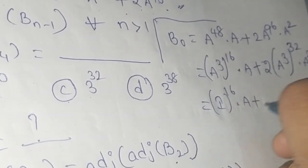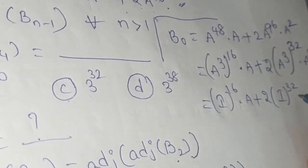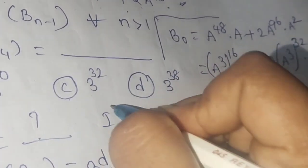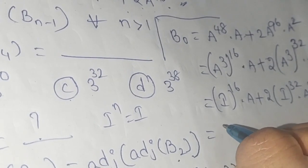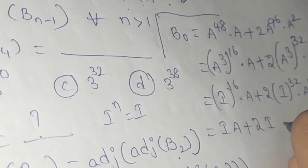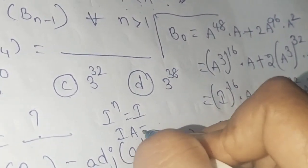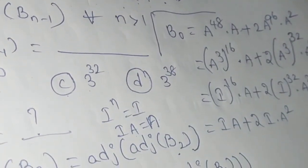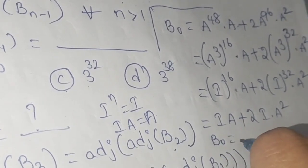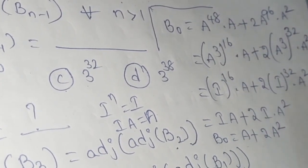Since I^16 = I and I^32 = I, and I times any matrix equals that matrix, we get B0 = A + 2A². So B0 simplifies to A + 2A².